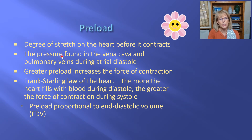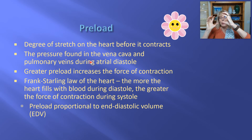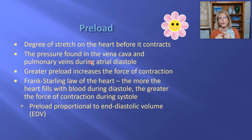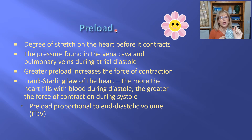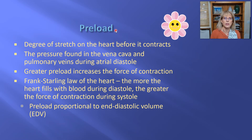Preload is proportional to the pressure found in the vena cava and pulmonary veins during atrial diastole — when the atria are relaxing. The more blood piling back toward the heart, the greater the preload, the bigger the atria fill, the more blood enters the ventricle, and the greater the end diastolic volume. Some textbooks say preload equals end diastolic volume. More preload means more EDV; less preload means less EDV.